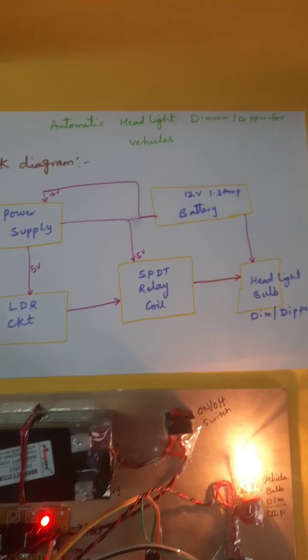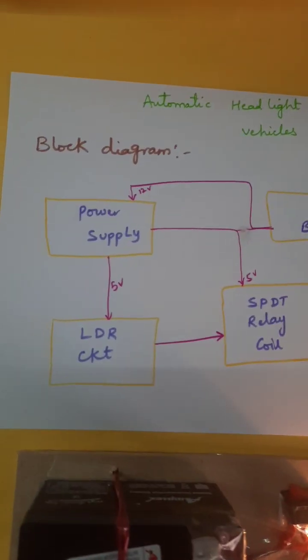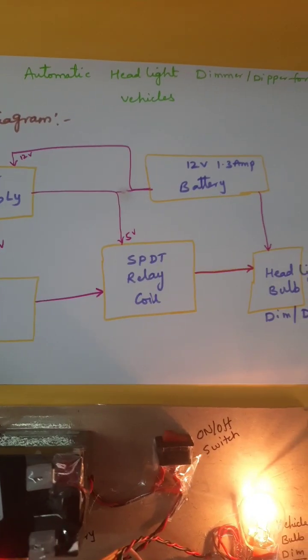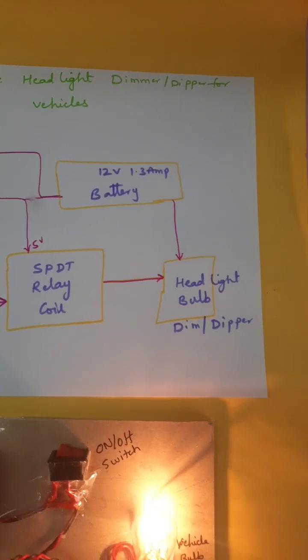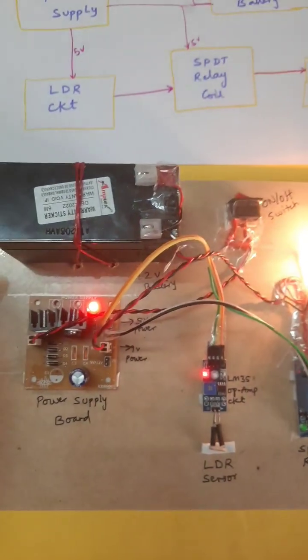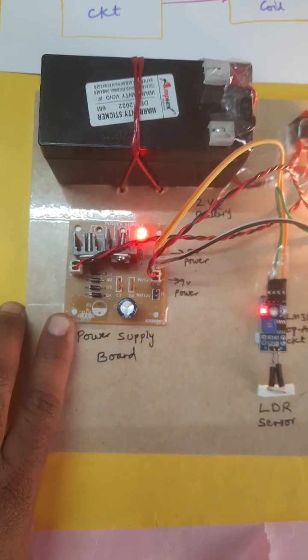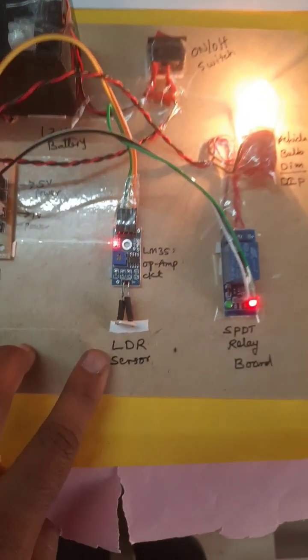This is an automatic headlight dimmer/dipper vehicle circuit. Components include: power supply board, LDR, SPDT relay, 12 volt battery, and vehicle bulb. We are using a 12 volt battery with 9 volt and 5 volt combination power supply, and an LDR circuit.